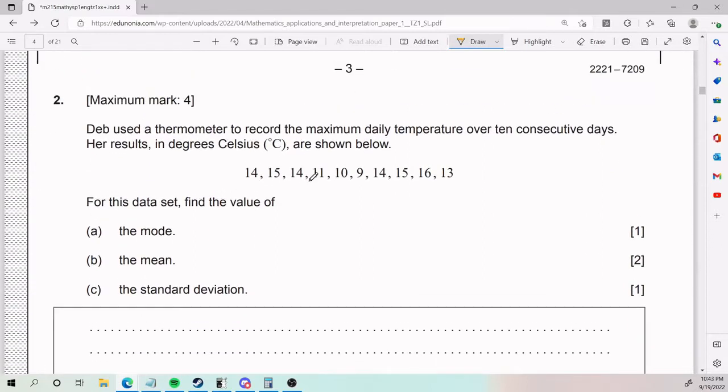Number two: Deb used a thermometer to record the maximum daily temperature over 10 consecutive days. Her results in degrees Celsius are shown below. For this data set, find the value of the mode, the mean, and the standard deviation. Now there are ways to find the mean by hand and you can find the standard deviation by hand, but it's a little more annoying. The one thing you can find by hand is the mode and it's relatively easy.